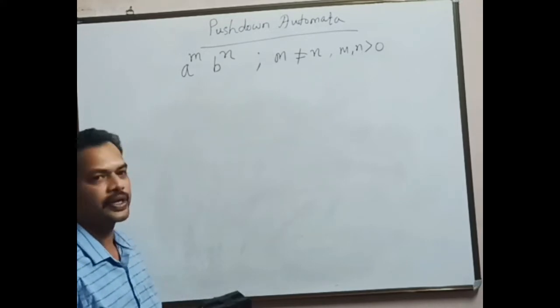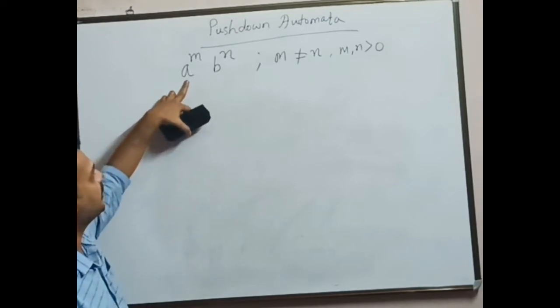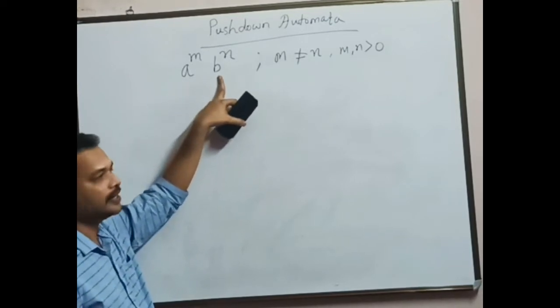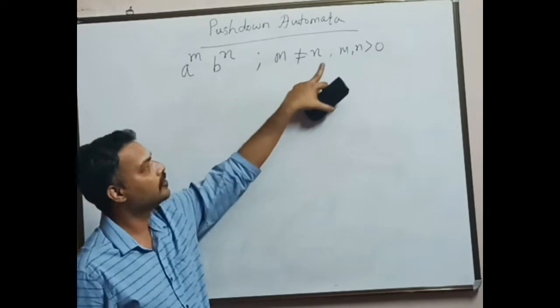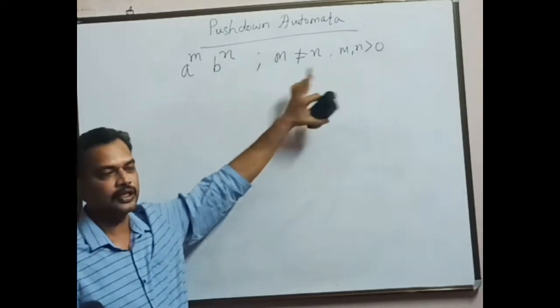Let us see how we can solve this particular problem. The problem is a to the power m, b to the power n, such that m not equal to n, and m and n greater than zero.